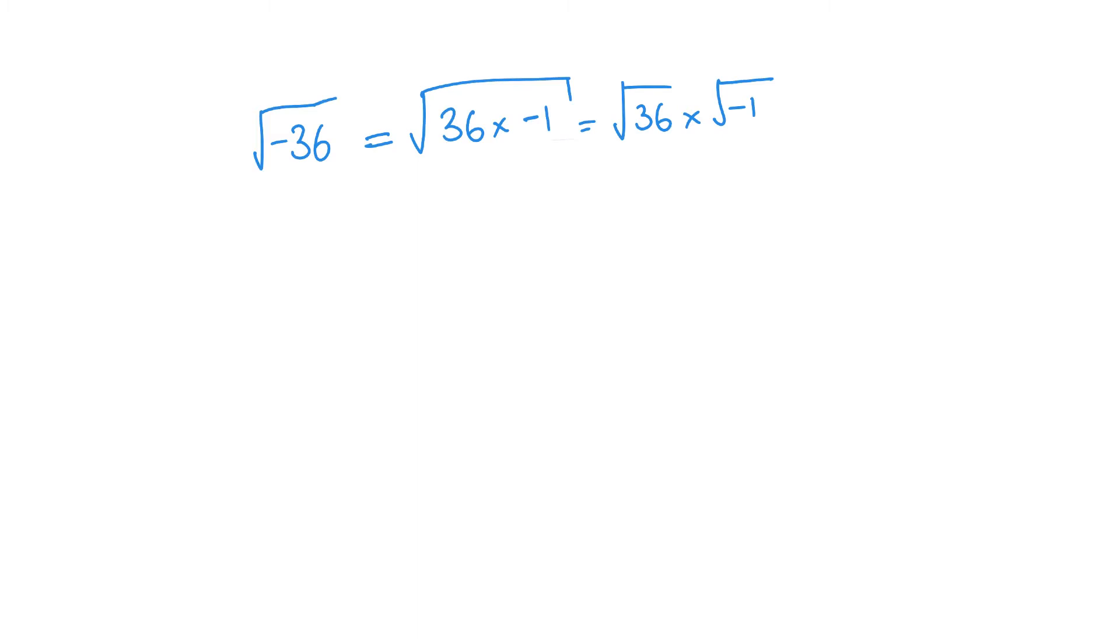And then splitting that up is the square root of 36 times the square root of negative one. Now the square root of 36 is 6 and the square root of negative one is i.